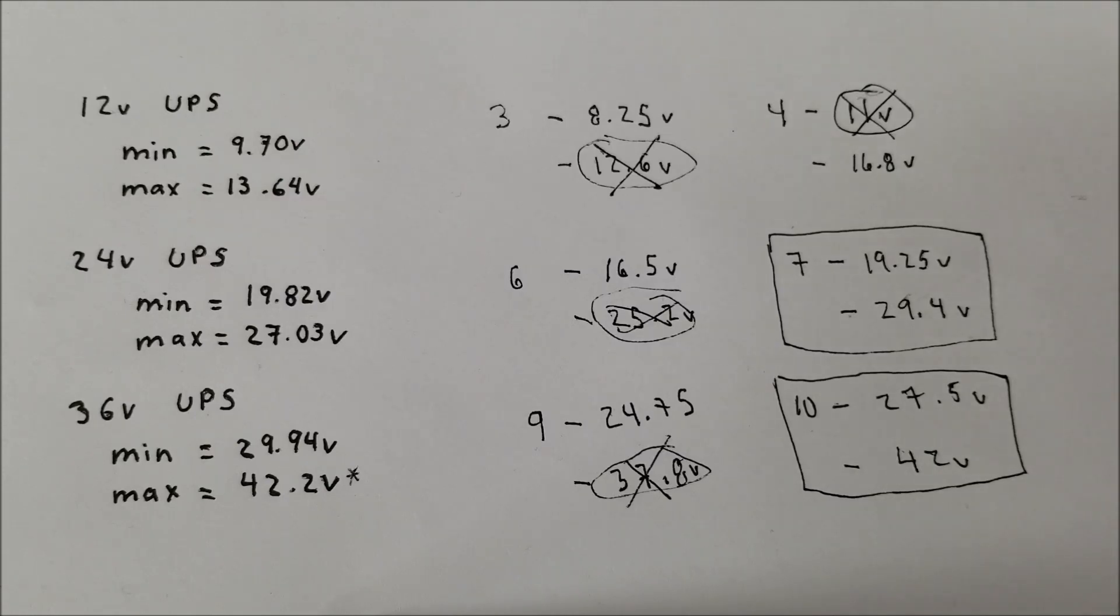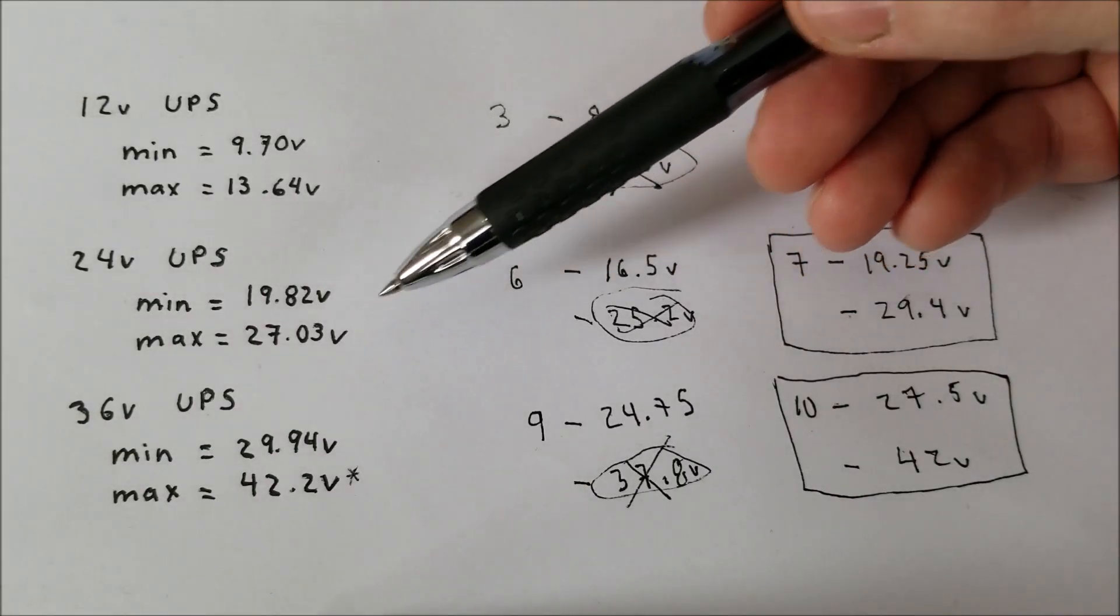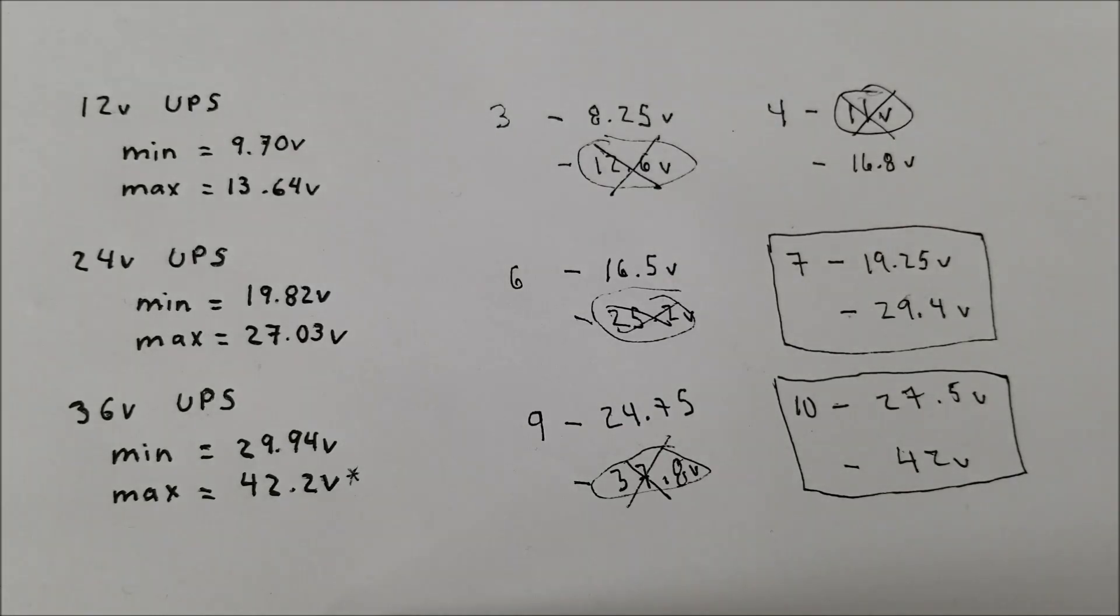Now one thing we have to note is that for this one here, the full charge voltage is obtained at 29.4V, however, the UPS will stop charging at 27V or a little above. Now what does that work out to? So 27.03V, we divide that by seven cells. That means each cell will only see 3.86V at the max. So that's quite far from being fully charged.